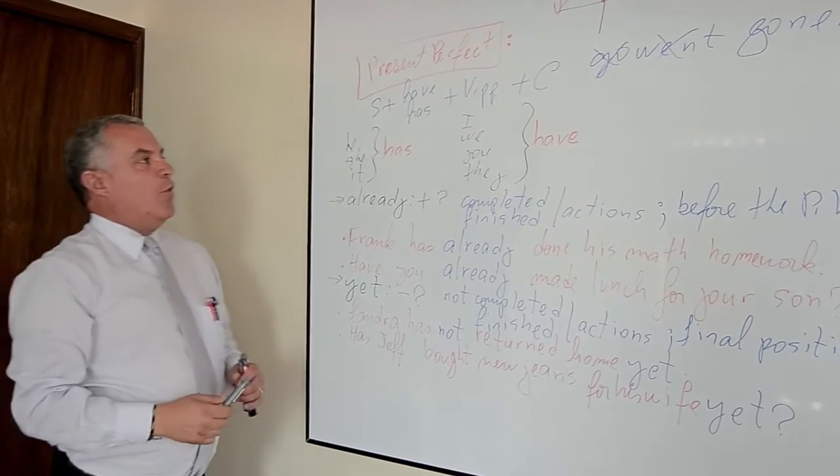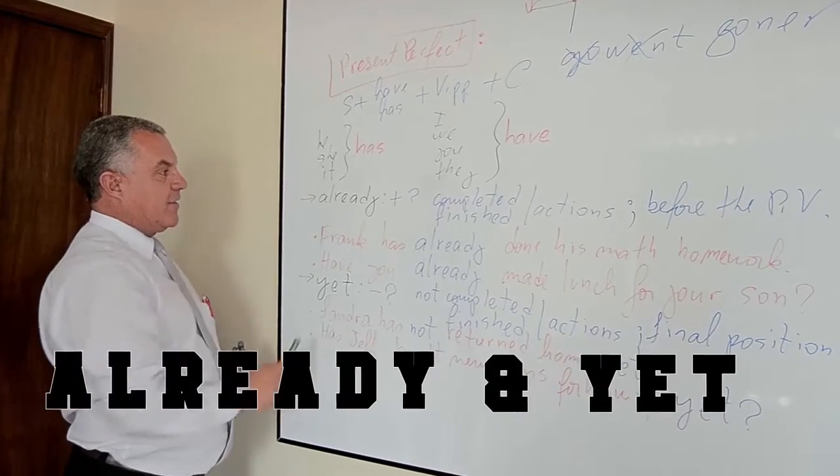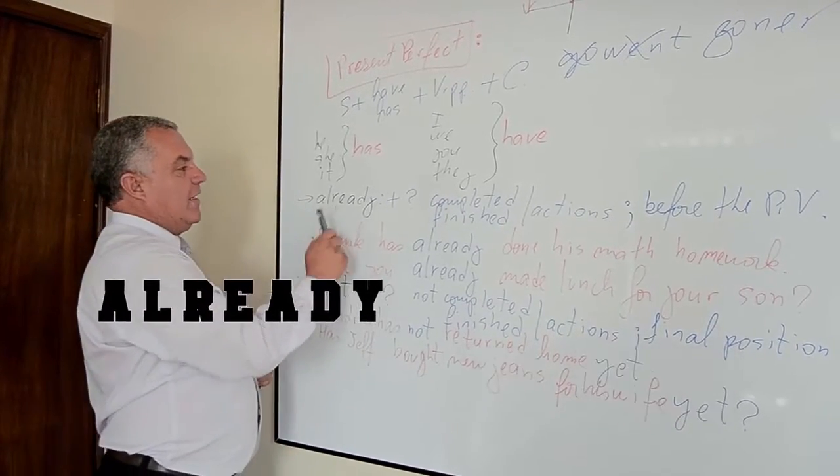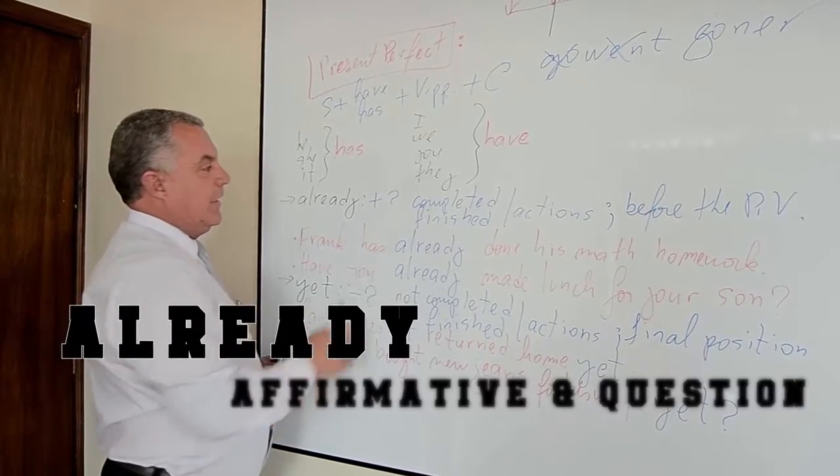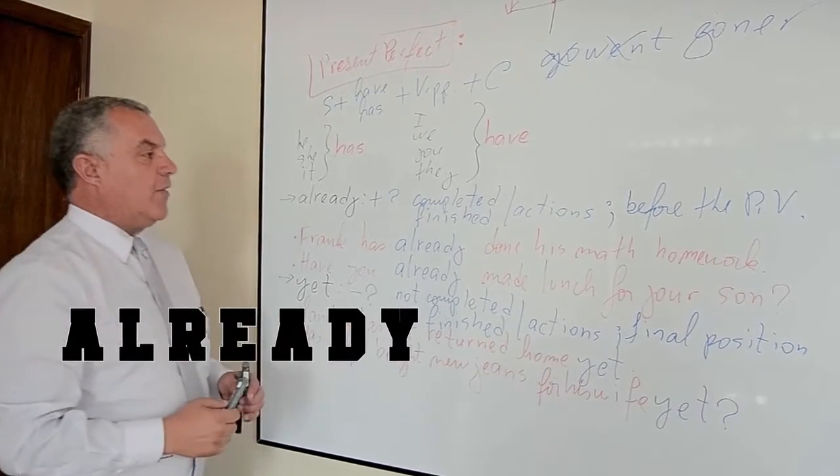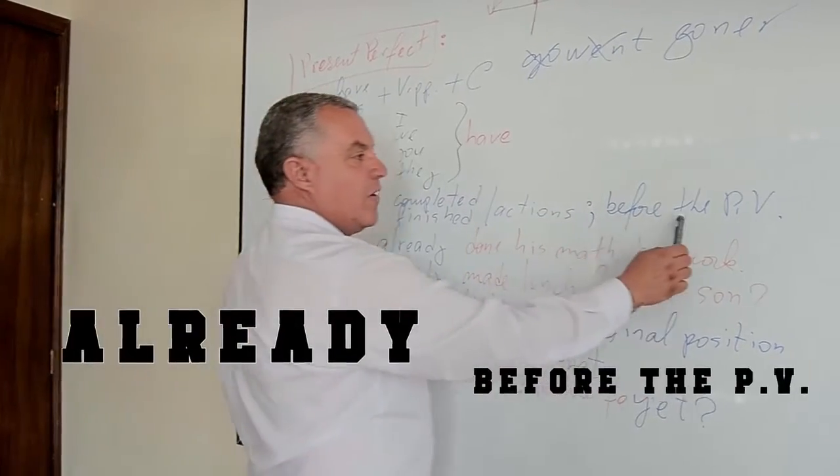Now, listen, with the Present Perfect we can use already and yet. Already, we're using affirmative and questions as well. Already indicates a completed or finished action. And the position is before the principal verb.